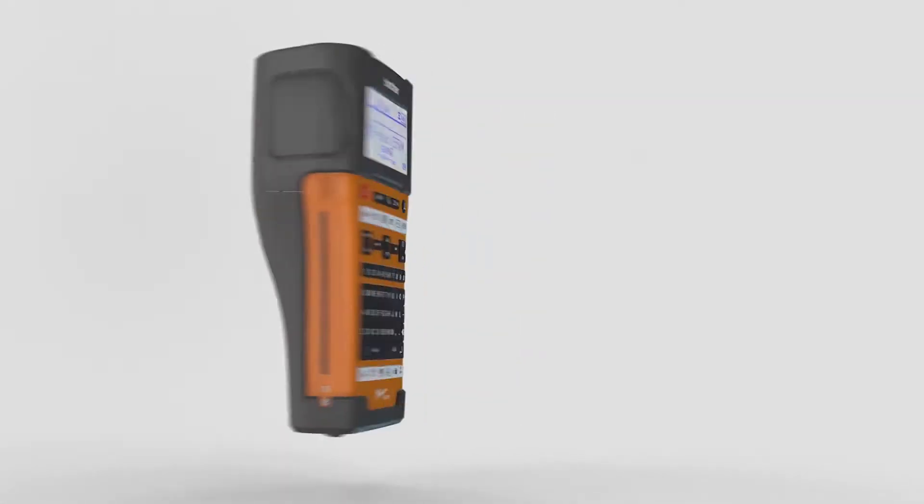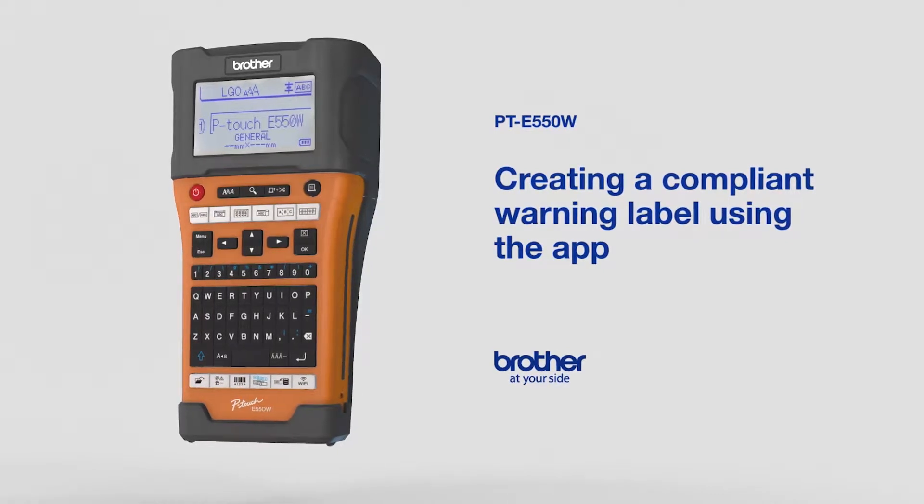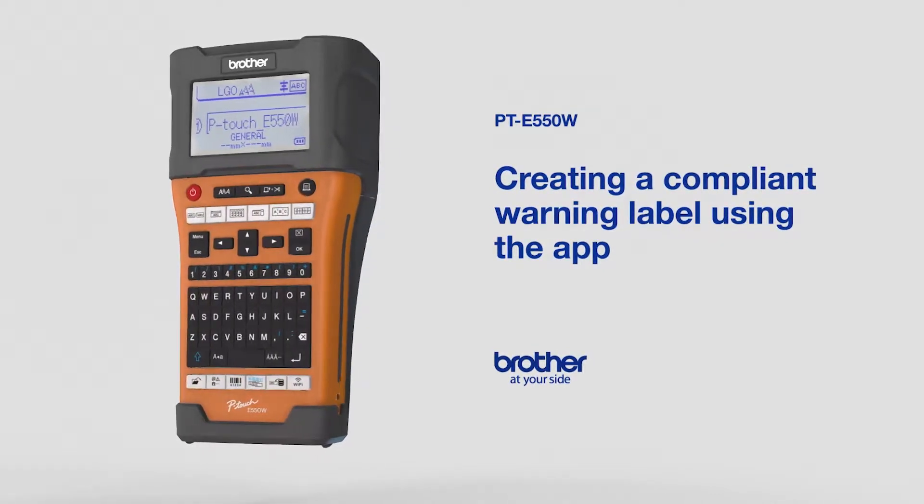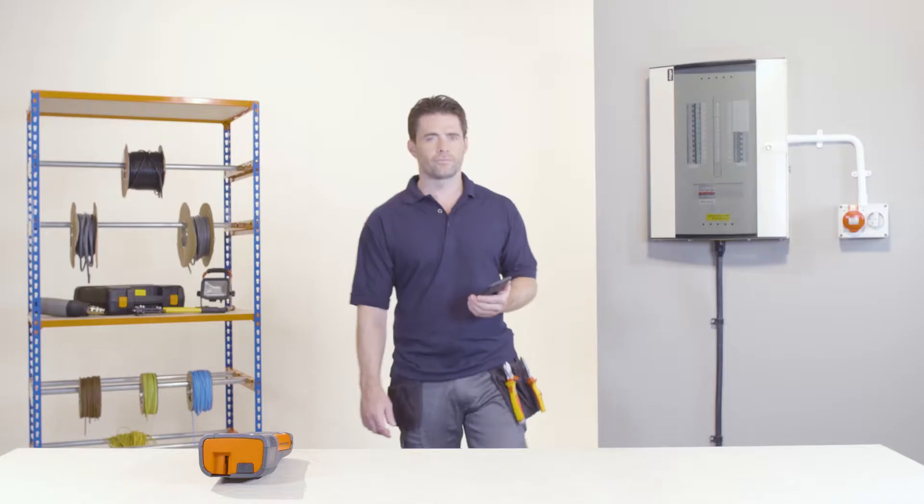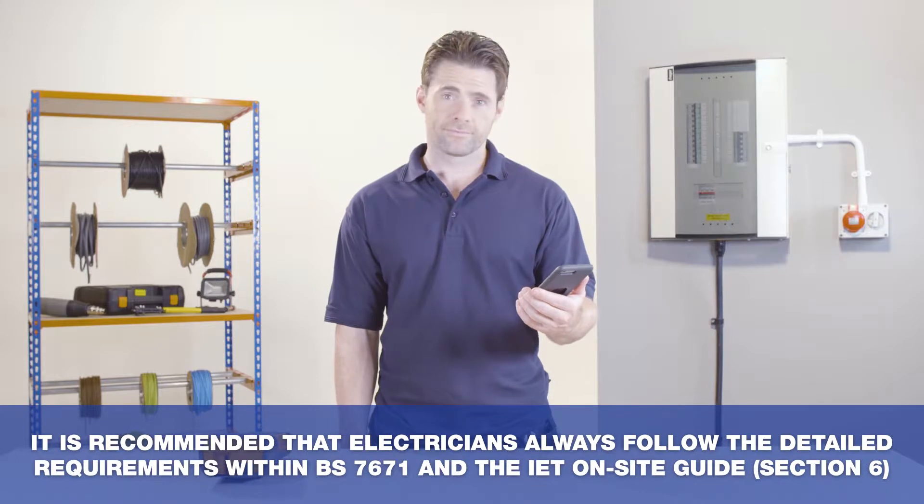In this video, we'll demonstrate how to create a compliant warning label using the Brother Mobile Cable Label Tool app with the PT-E550W printer. Warning labels must comply with specific dimensions and font sizes.